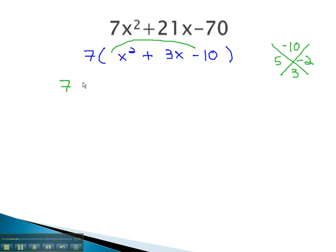If there is a GCF, we will keep that GCF in front of everything as we continue to factor. Because we had a 1 in front of x squared, we can use the numbers 5 and negative 2 directly in our factors, x plus 5 and x minus 2.